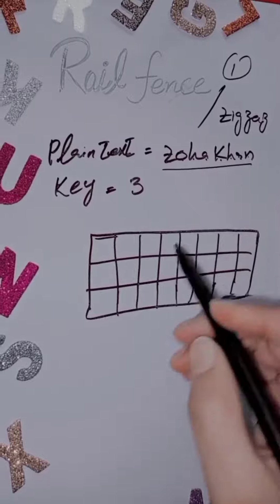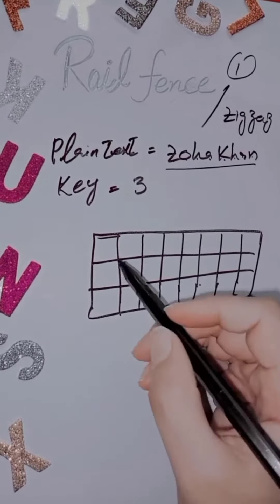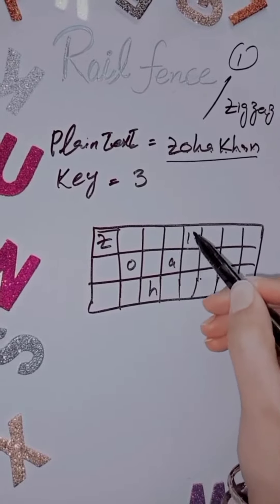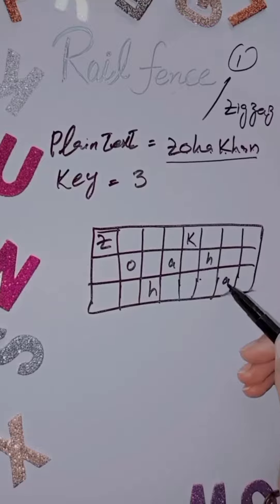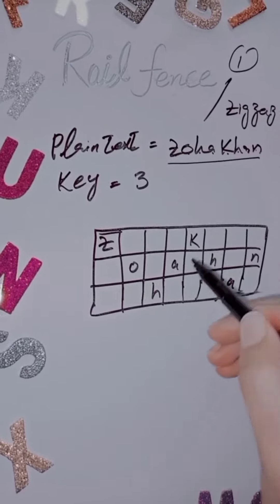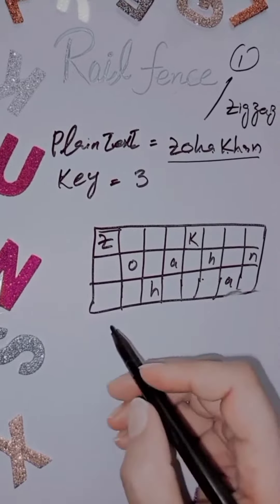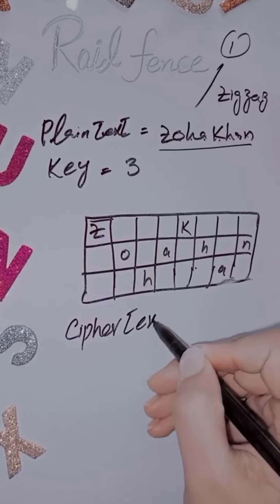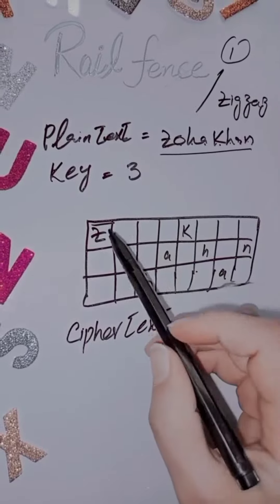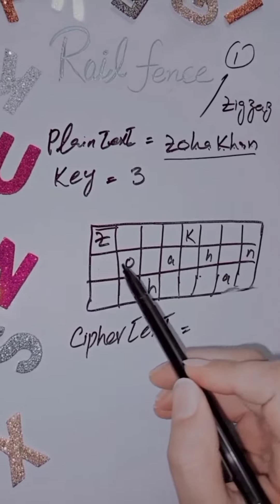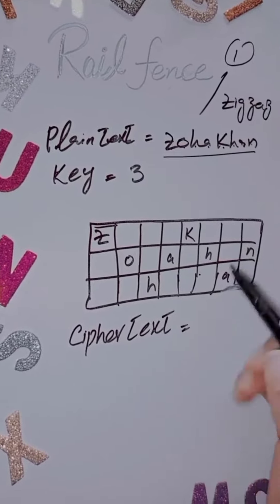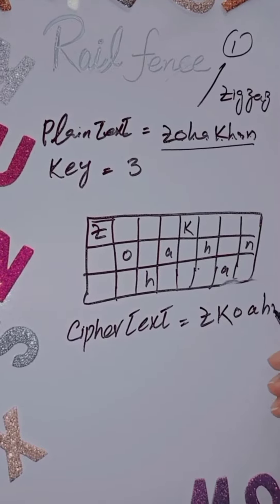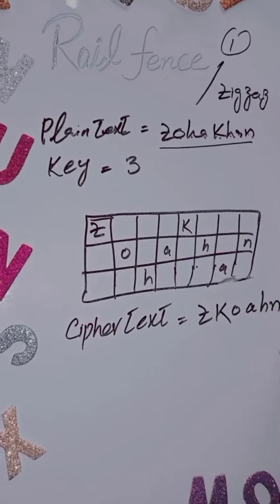We have the plain text written in the zigzag way — Zohar Khan. This is our zigzag pattern. When we have the cipher text, we write it as: K, O, A, H, N, H, A.